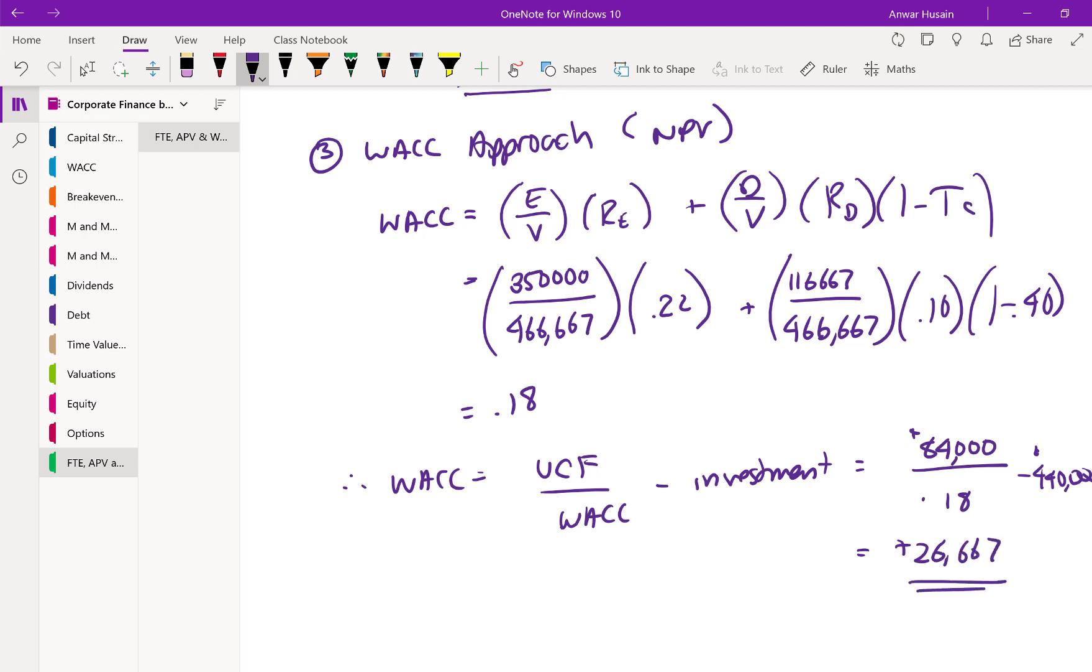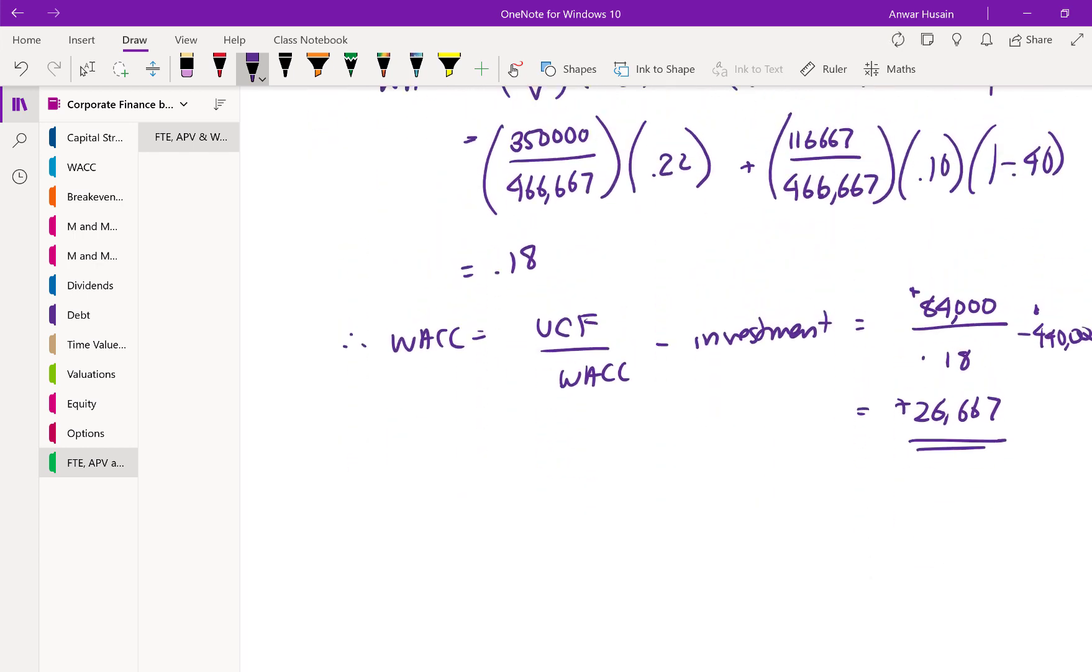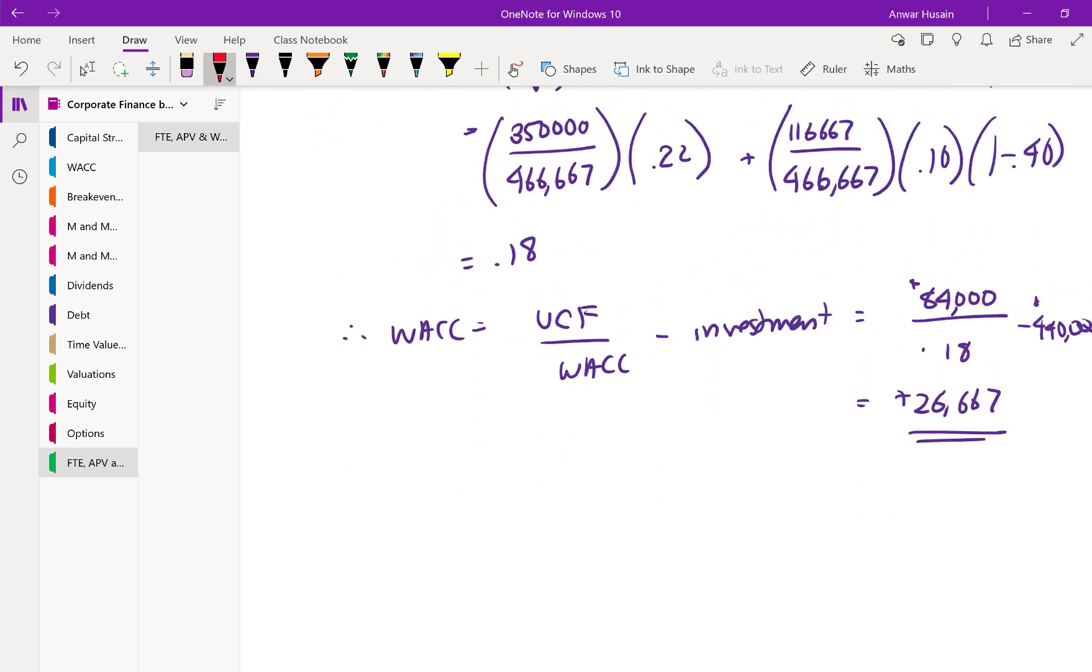Okay, so all three are the same. Now, this one illustrates it the most, if you look at it. Because remember, when we did it as all equity, it wasn't profitable at 20%. But when you do this at 18%, it is profitable.